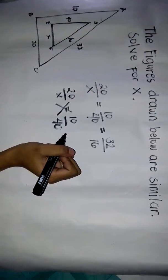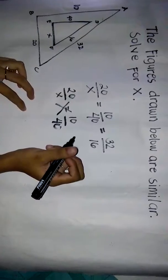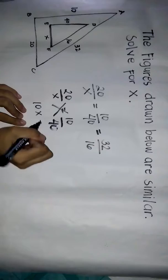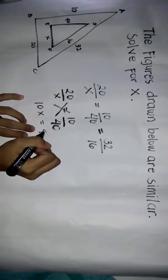We have X times 10 equals 10X equals 20 times 40, which equals 800.